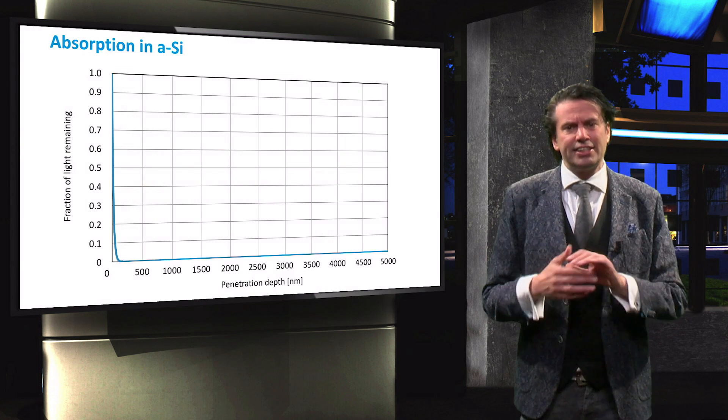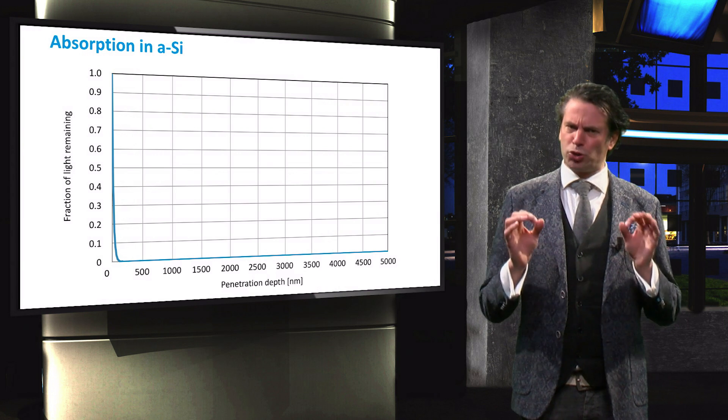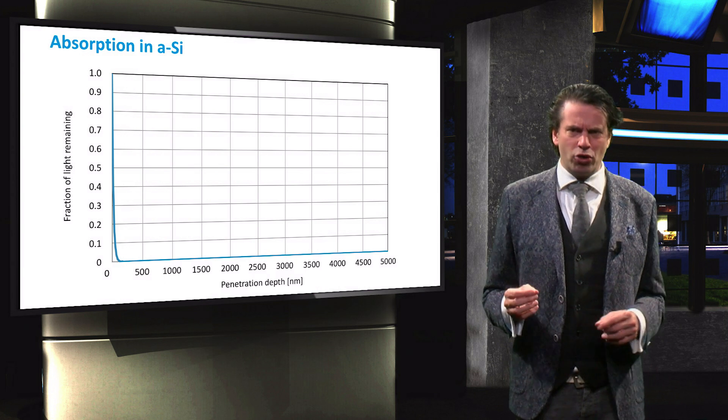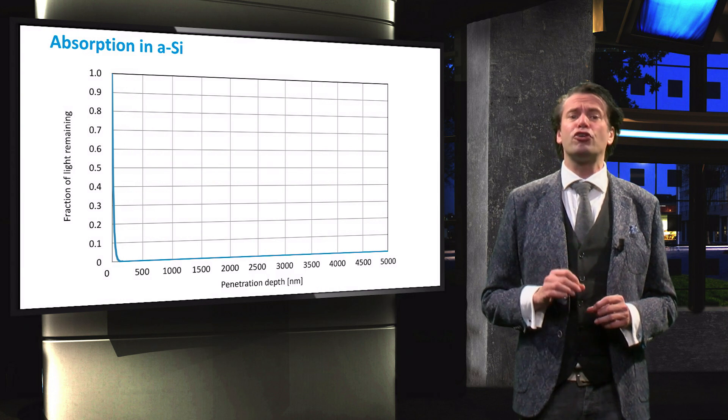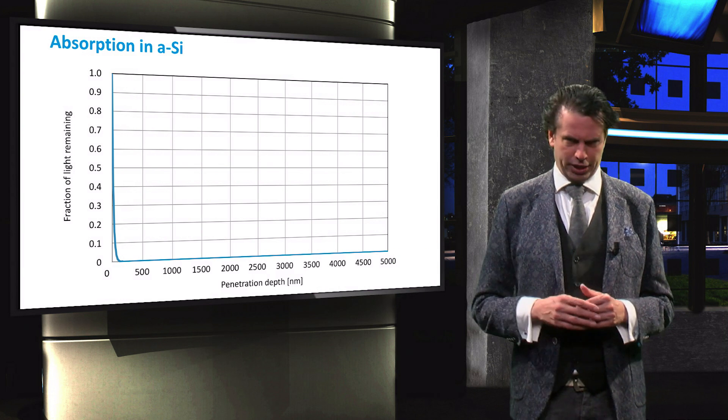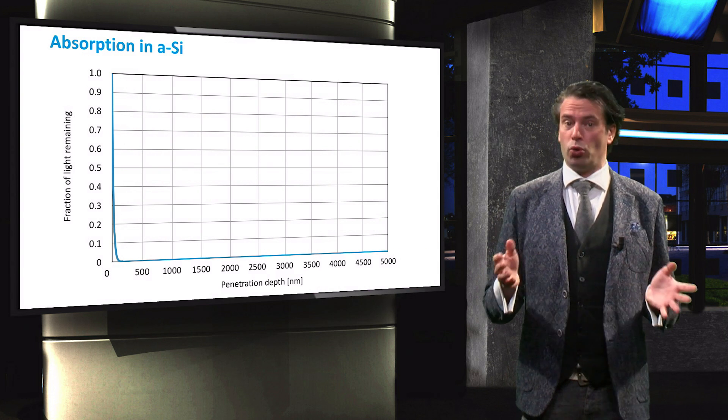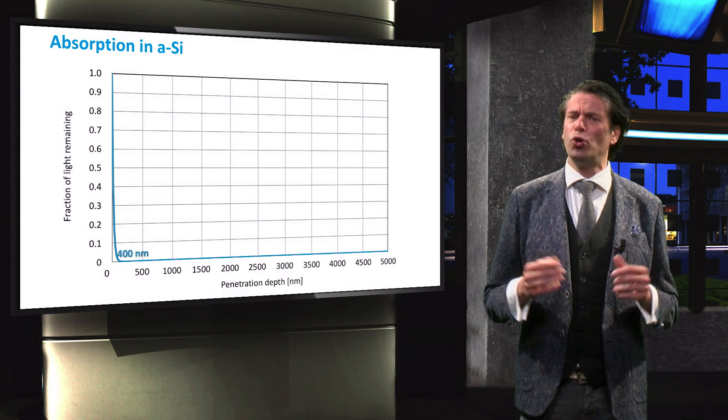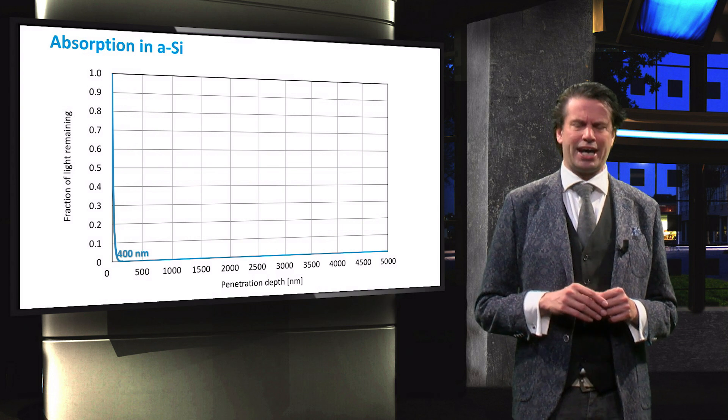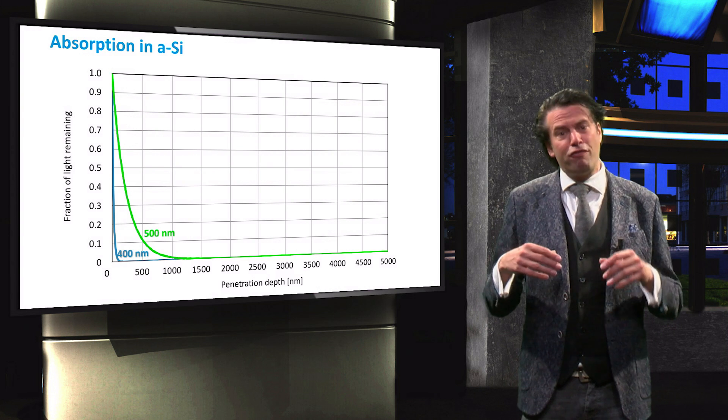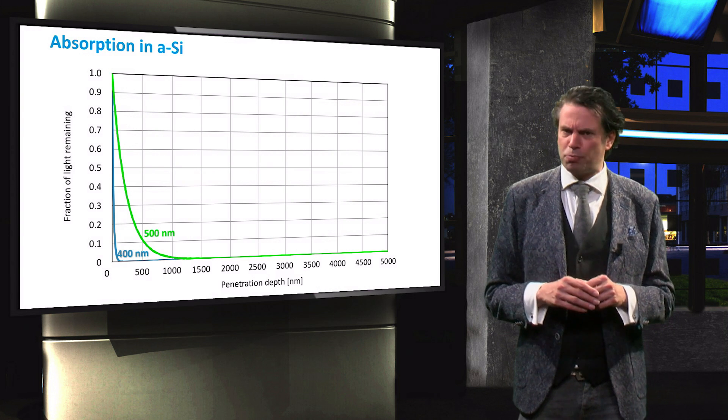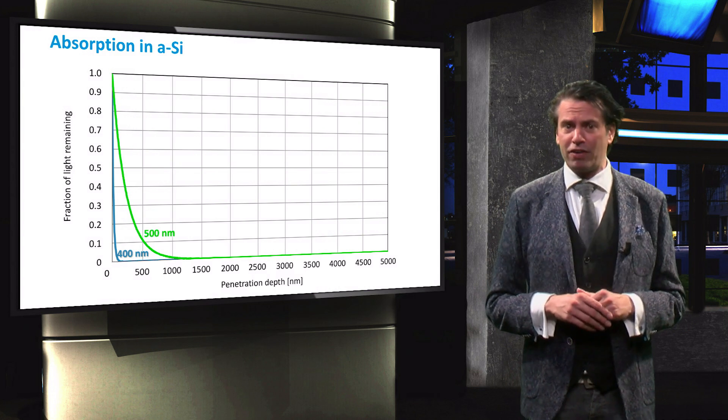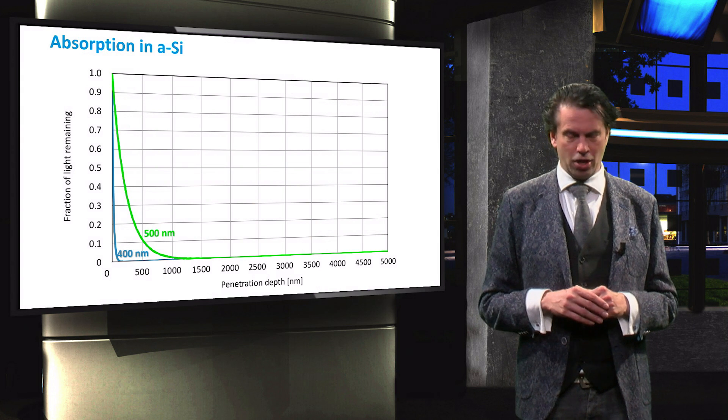To understand the necessity for light trapping we will start with the absorption in amorphous silicon. This graph shows the fraction of incident light remaining on the y-axis as a function of the penetration depth in an amorphous silicon absorber layer. The blue line represents blue light at a wavelength of 400 nm. We can see that nearly all the blue light is already absorbed in the first 100 nm. Green light at a wavelength of 500 nm is not absorbed quite as fast. About 10% of the incident green light remains after travelling 500 nm through an amorphous silicon absorber.